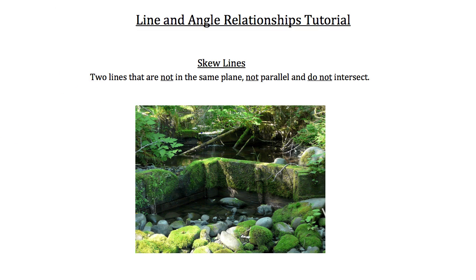Take a look at this image for an example of skew lines. The top of the first wooden dam runs in one direction, and in the back you can see a second wooden dam running in a different direction. The second wooden dam is higher than the first, so if the first line continued it would go right underneath the second line. These two lines are in different planes — the first on a lower plane, the second on a higher plane. They're not parallel because they run in different directions, and they'll never intersect because they're not on the same plane — they can't touch each other.